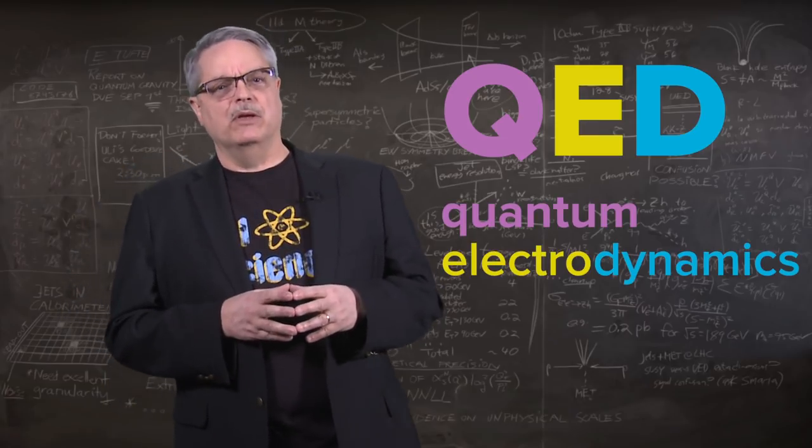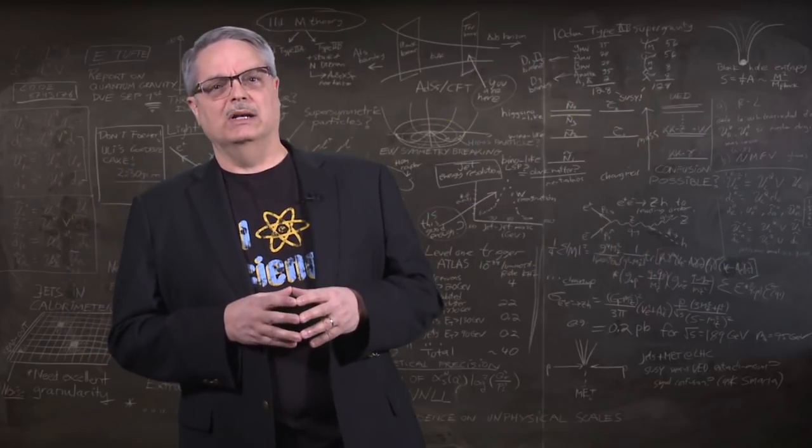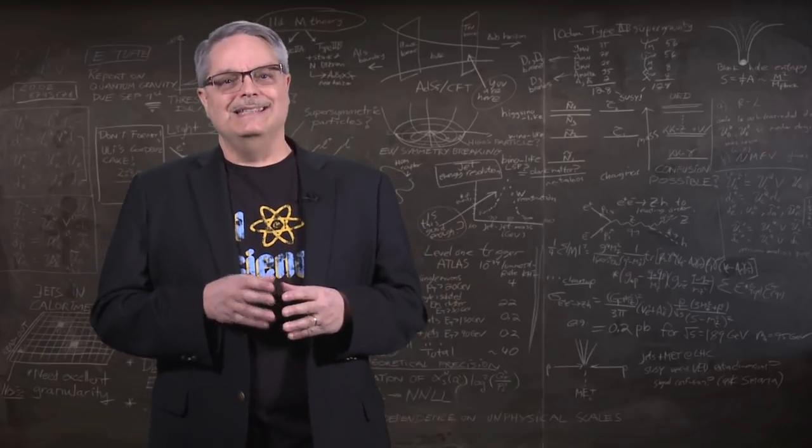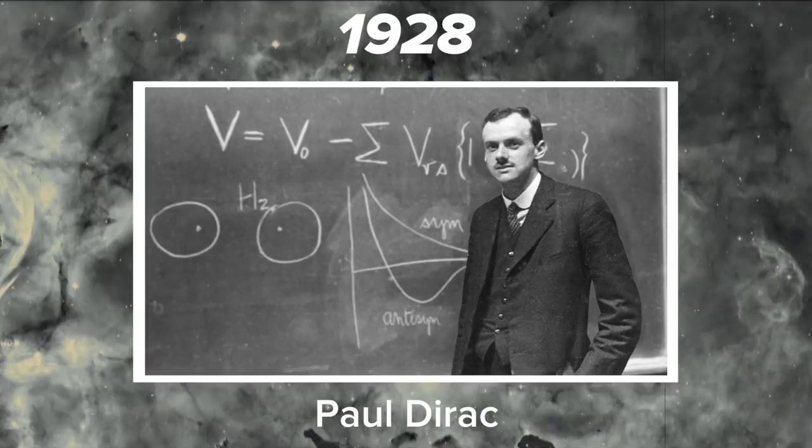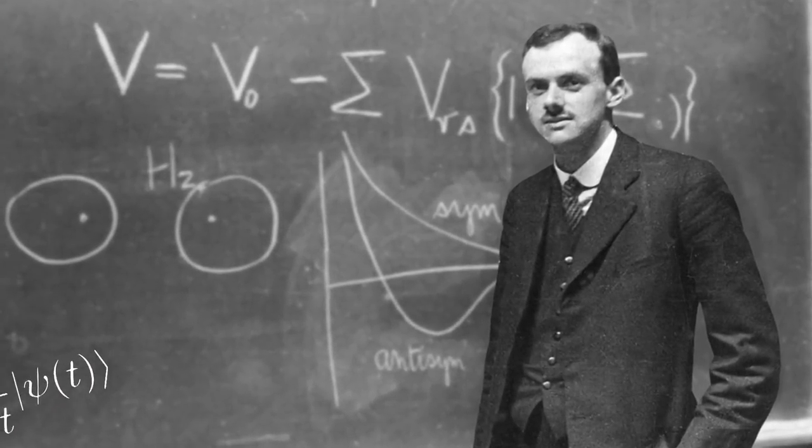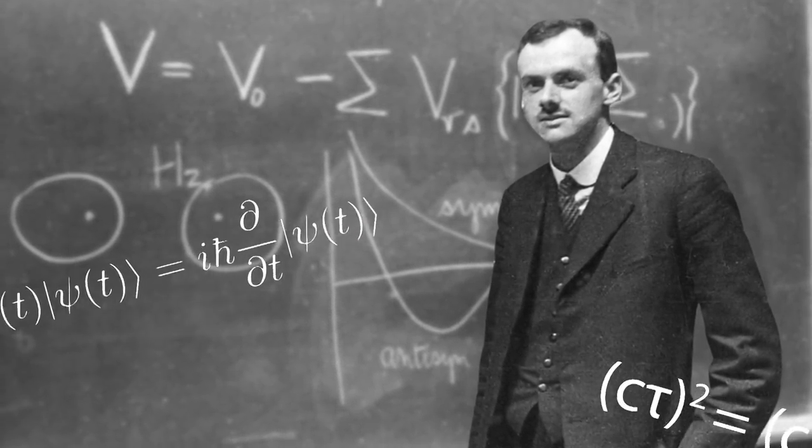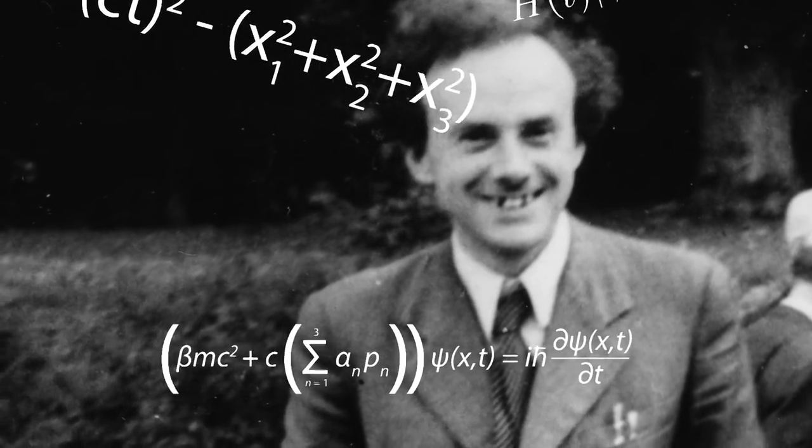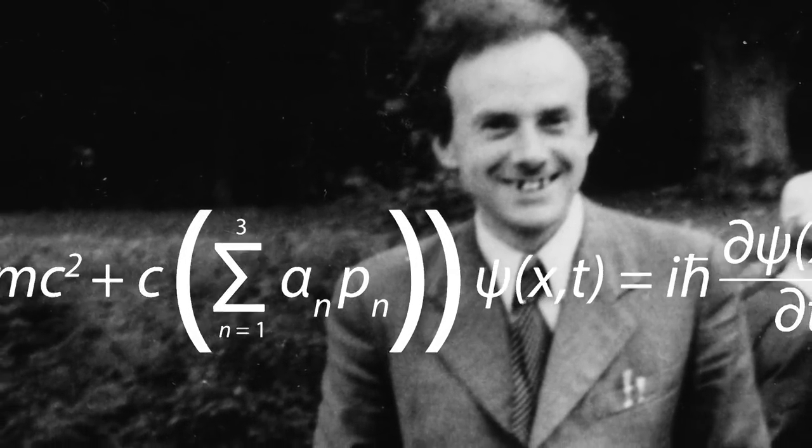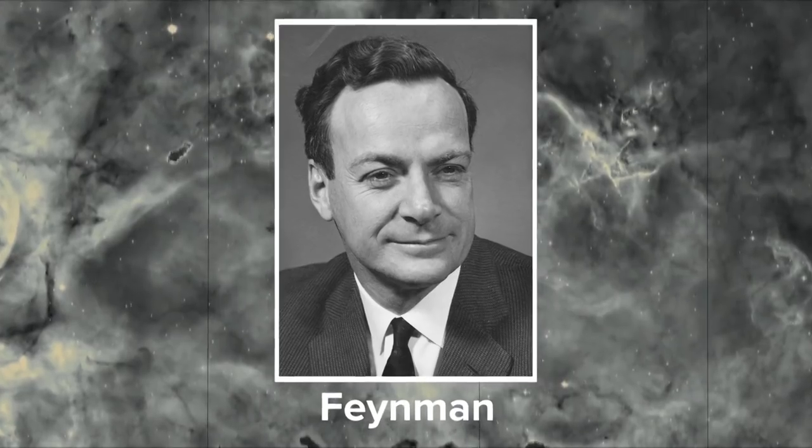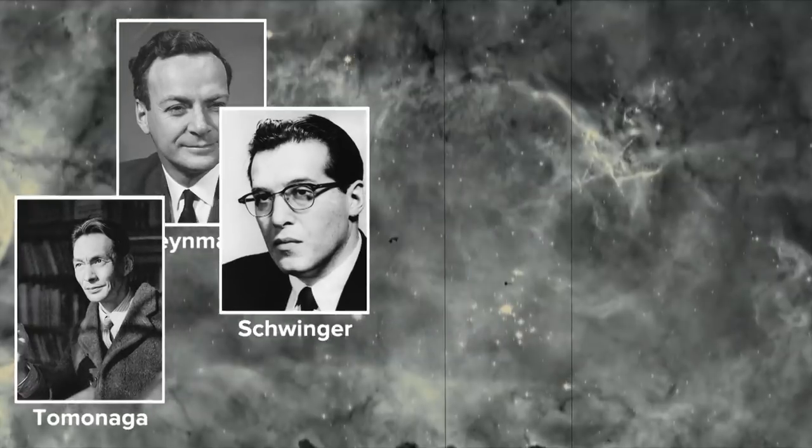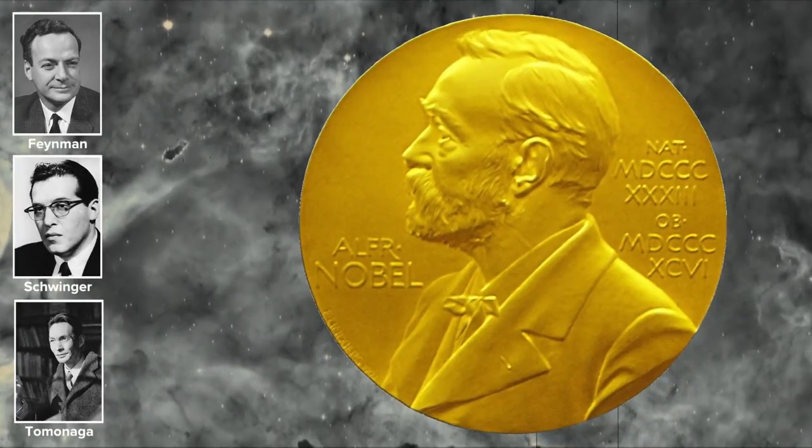They say that success has many mothers and that is true of QED as well. Well, fathers in this case. The first step forward was made in 1928 by Paul Dirac when he successfully wed quantum mechanics and Einstein's theory of special relativity. Along the way there were many other contributors, but the ones who got the explicit credit for the theory were Richard Feynman, Julian Schwinger, and Sin Itiro Tomonaga. They shared the 1965 Nobel Prize in Physics for their insights.